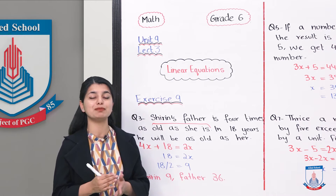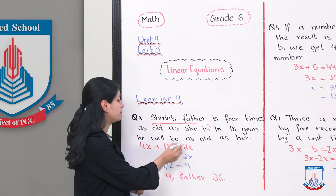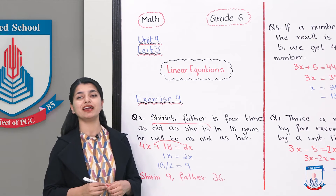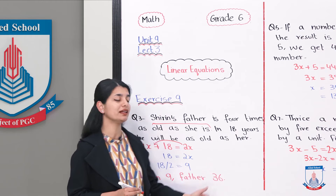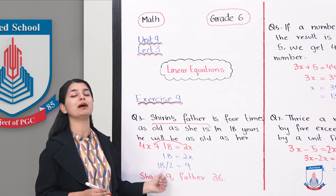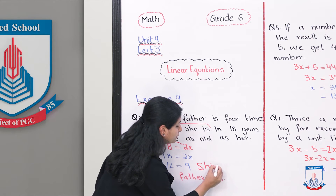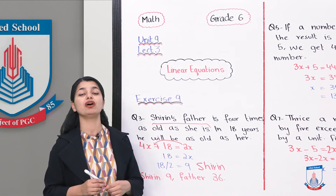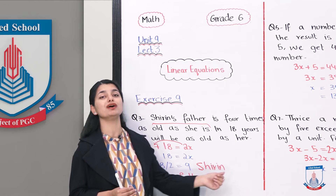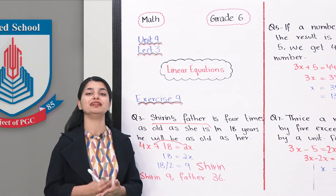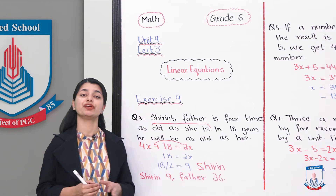We have constructed the equation and now we solve it. Subtracting 2x from 4x gives 2x. So 18 equals 2x, and dividing both sides by 2 gives x equals 9. Shiri's age is 9 years old. Her father's age is 4 times 9, which is 36. So her father is 36 years old.